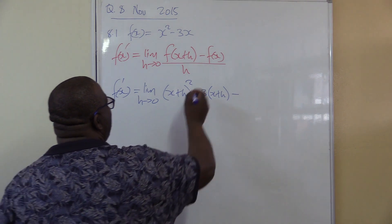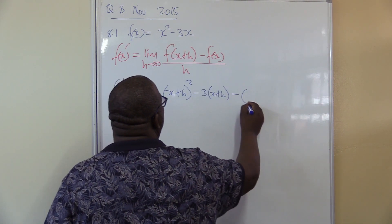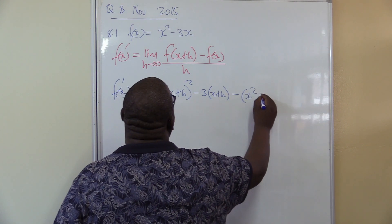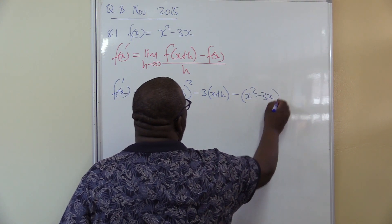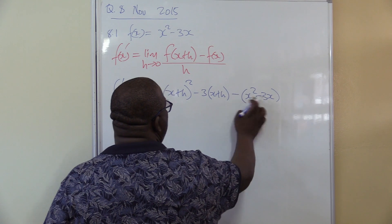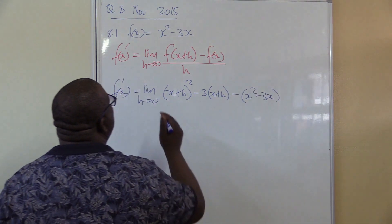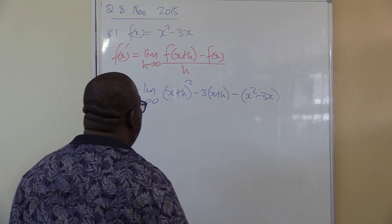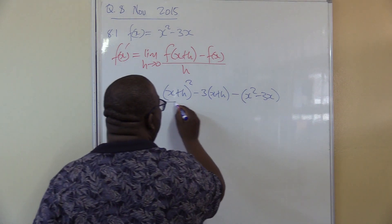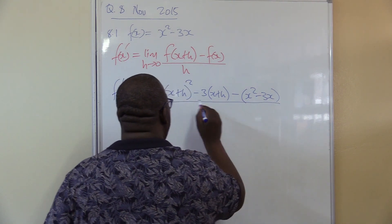I can now subtract my f of x. What is my f of x? It is, make sure that you're putting it in brackets, it is x squared minus three x. If you don't put it in brackets, this will remain negative. It is important that what you substitute must be in brackets. This is all over h.